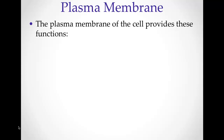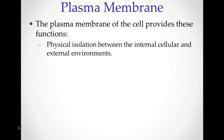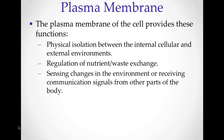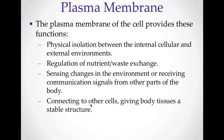The plasma membrane is going to provide the following functions: physical isolation between the internal cellular and external environments; regulation of nutrient and waste exchange; sensing changes in the environment or receiving communication signals from other parts of the body. This is how cells are going to communicate with each other and how chemical messages get sent from one part of the body to another. There's going to be a receptor in the plasma membrane that receives those signals.